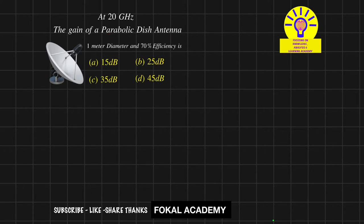First of all, write the given data here. You are given the frequency F equal to 20 GHz, and for the parabolic dish antenna, diameter is 1 meter.